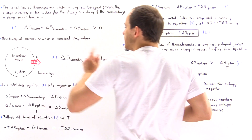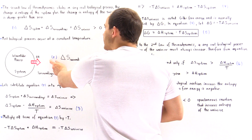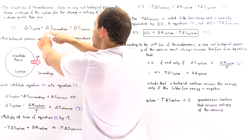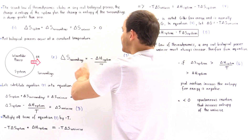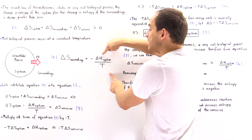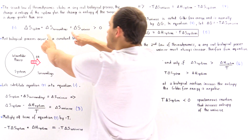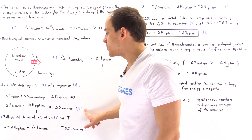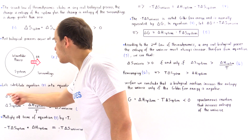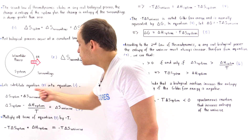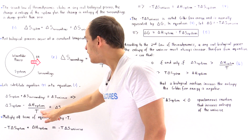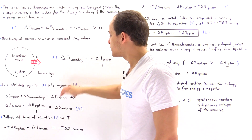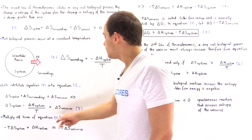Let's call this equation one and the entropy definition equation two. We can now take equation two and substitute the delta S of the surroundings — which equals negative delta H of the system divided by T — into equation one. Replacing that quantity gives us equation three: the change in entropy of the system minus the change in enthalpy of the system divided by the temperature equals the change in entropy of the universe.